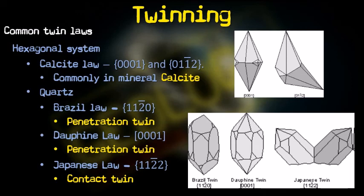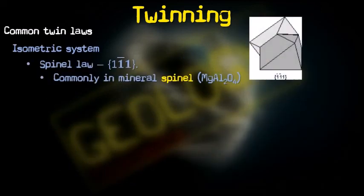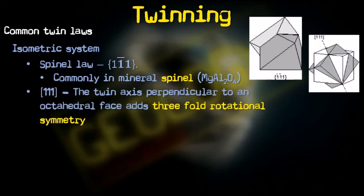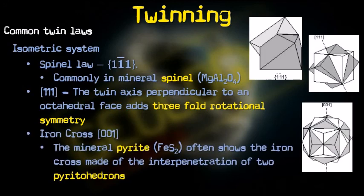In the isometric system, the spinel law is (1̄11), commonly seen in spinel. Then (111) is a twin axis perpendicular to an octahedral face with 3-fold rotational symmetry. Iron cross twinning has twin axis (001), shown by pyrite, which often displays this as the interpenetration of two pyritohedra inside each other, as seen in the figure.